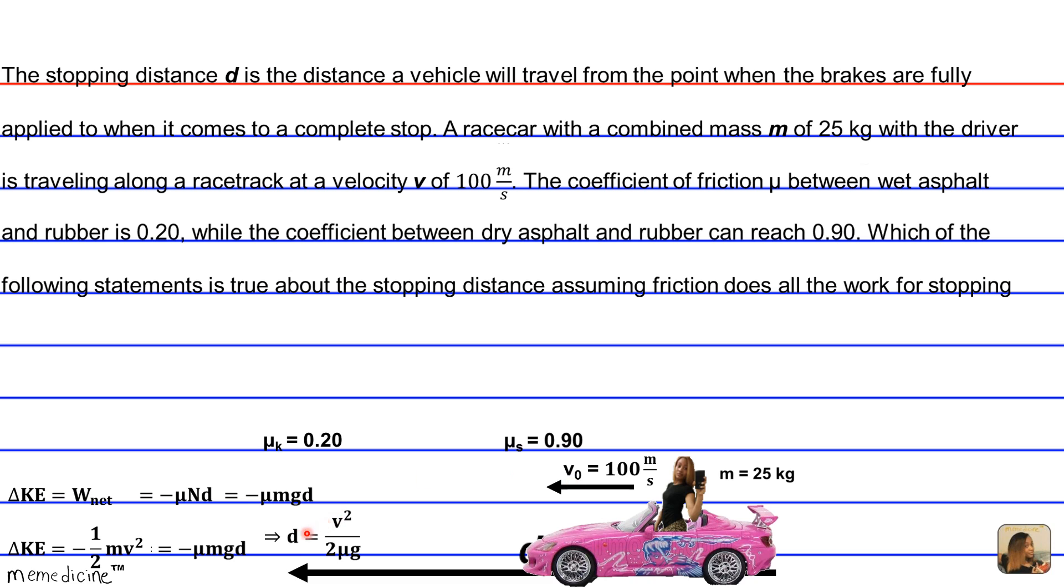All right, so now let's think about our answer choices. Hopefully you remember them. Our first answer choice discusses the stopping distance d being proportional to the velocity. Well, here we see that it is proportional, but it's proportional to the square of the initial velocity. So answer choice A is wrong.